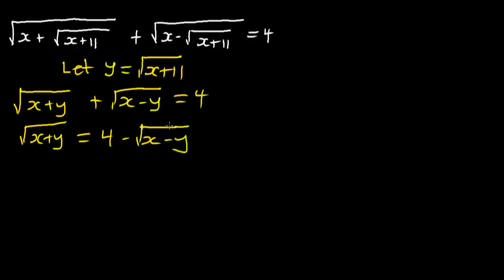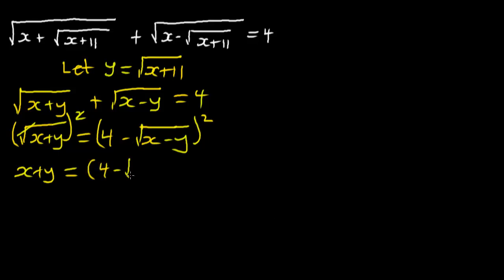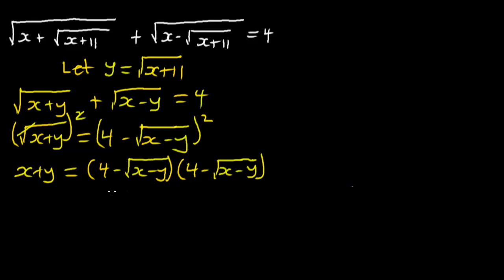Now I'm going to square both sides. Squaring both sides, the square cancels the square root on the left, leaving X plus Y. On the right-hand side, we expand it as 4 minus the square root of X minus Y, multiplied by 4 minus the square root of X minus Y.